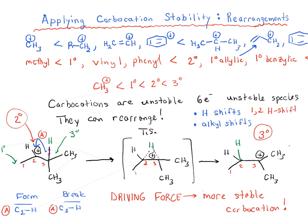The second type of rearrangement is called an alkyl shift. Instead of having a hydrogen on carbon three, imagine we have a CH3 group. Carbon three now has four carbons attached to it — this is a quaternary carbon. If we had a carbocation on carbon two, moving a hydrogen from the adjacent primary carbon would give a primary carbocation, which is less stable than secondary. But moving an alkyl group from the quaternary carbon would give a tertiary carbocation, which is more stable than secondary.